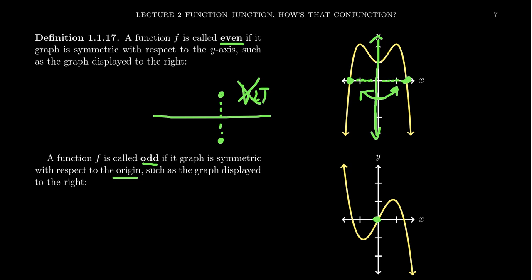I should also mention that it's not possible for a function to be both even and odd simultaneously. Because if it was even and odd, you could actually argue it would have to be symmetric with respect to the x-axis, which gets us in the same problem we were in a moment ago.